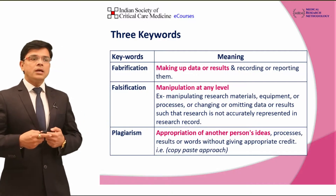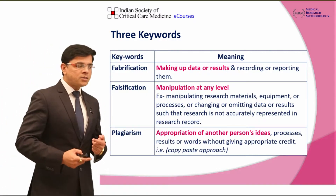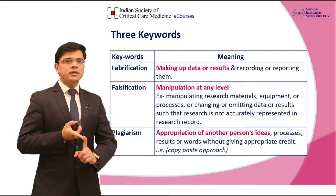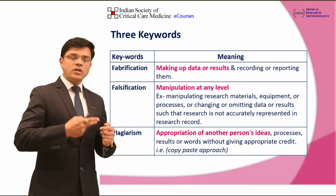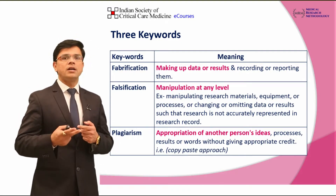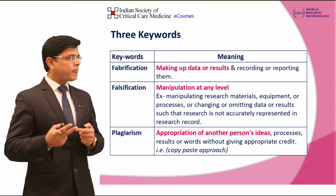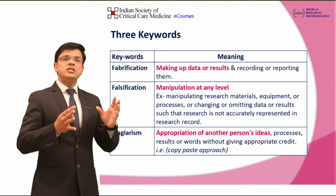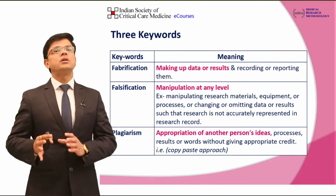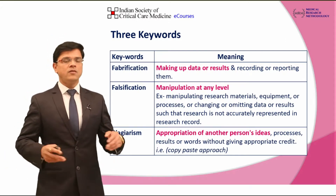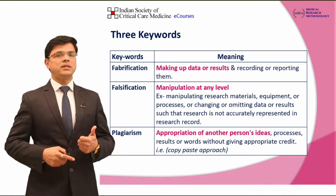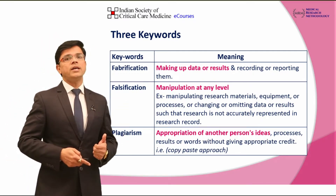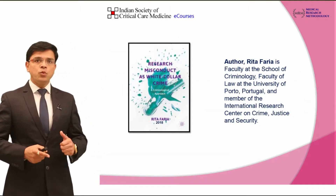To simply understand these three words: fabrication is manipulation, falsification is false or cooked-up data and results, and plagiarism is copy-pasting information already available online into your research at any level, even in the review of literature or in methods. This is unacceptable and is known as research misconduct.